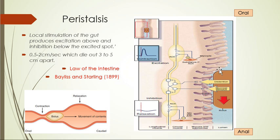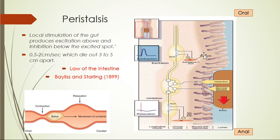In a zoomed view, the bolus stimulates nerve fibers and the myenteric plexus. This leads to contraction of smooth muscle above the bolus. Downward, inhibitory neurotransmitters are released to cause relaxation. Specifically, substance P and acetylcholine cause contraction, while nitric oxide, VIP, or ATP cause inhibition — that is, relaxation.